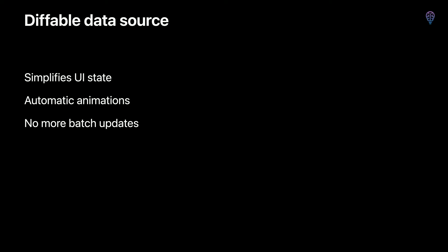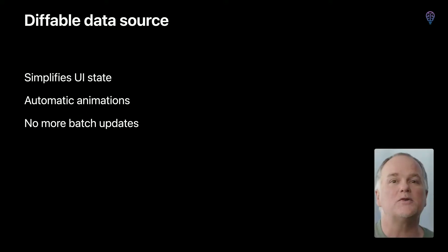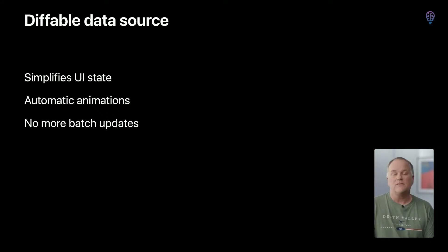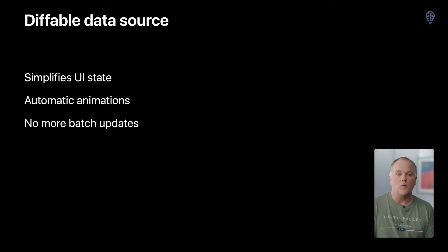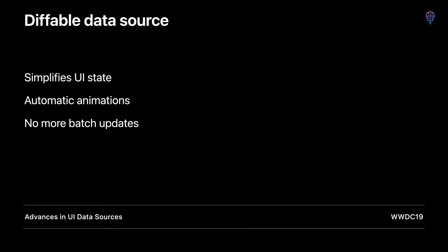To review: diffable data source, introduced in iOS 13, greatly simplifies the management of UI state through the addition of a new snapshot data type. Snapshots encapsulate the entire UI state via unique section and item identifiers. When updating a UICollectionView, we create a new snapshot, populate it with the current UI state, and apply it to the data source. Diffable data source computes the differences and animates things automatically. We covered this API in detail in the WWDC 2019 video "Advances in UI Data Sources."